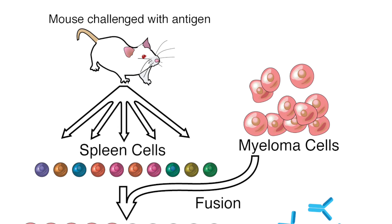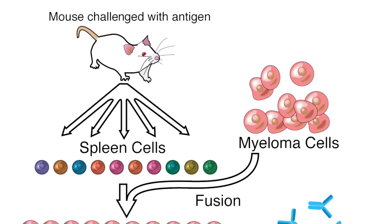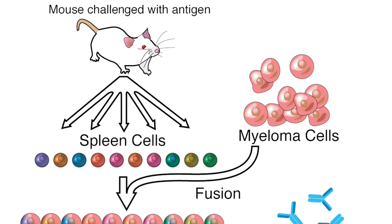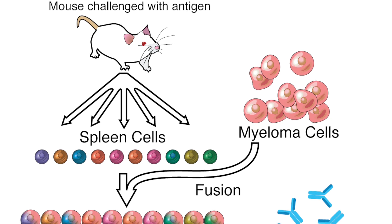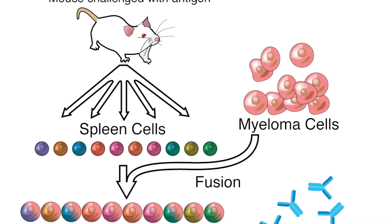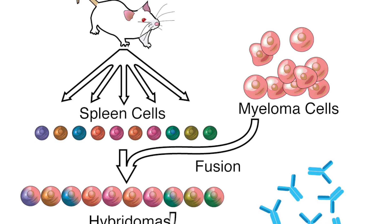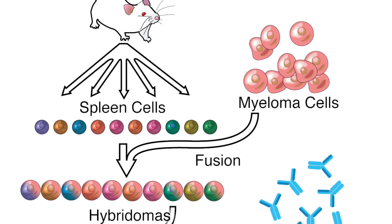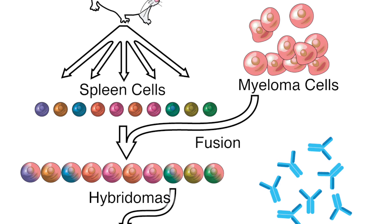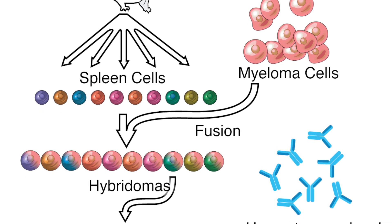In this video we're looking at monoclonal antibodies. First, we need to look at how to make them. Some white blood cells known as lymphocytes make antibodies, yet they cannot divide. In contrast, tumor cells do not make antibodies, yet they can divide rapidly to make a clone of cells.